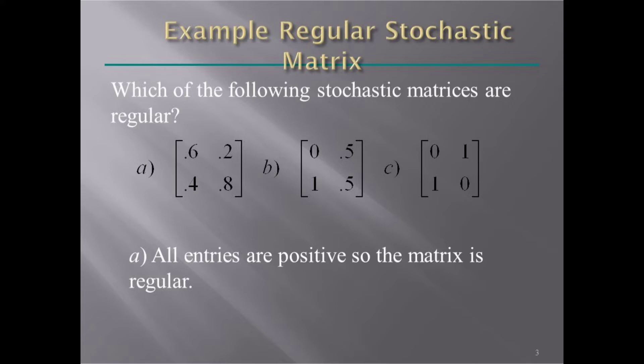Here we discuss a regular stochastic matrix example. Which of the following stochastic matrices are regular? Here we have three matrices A, B, and C. In A, all entries are positive, so the matrix is regular.